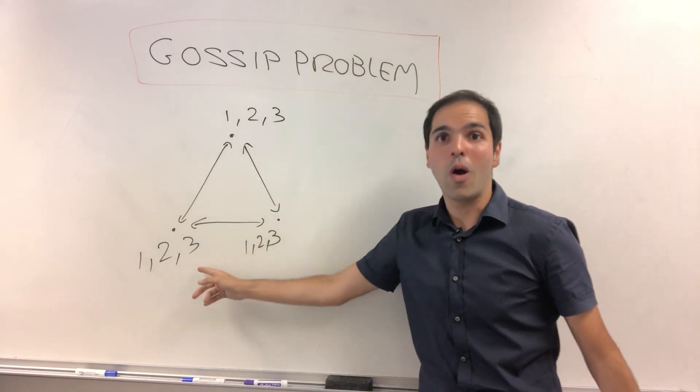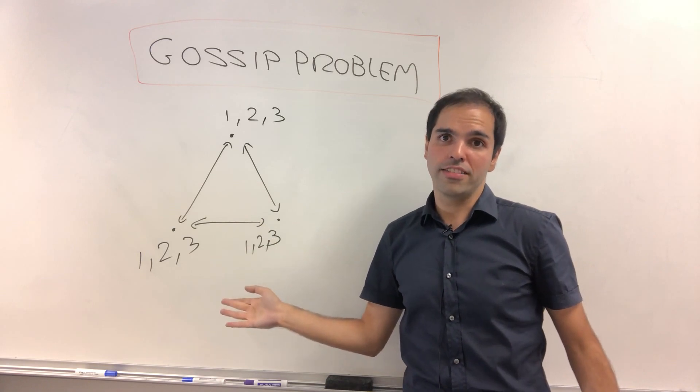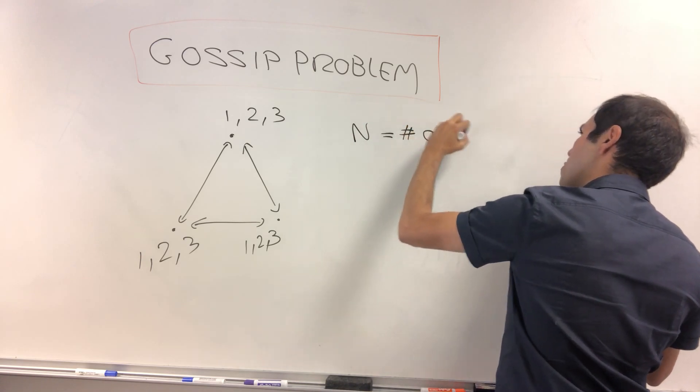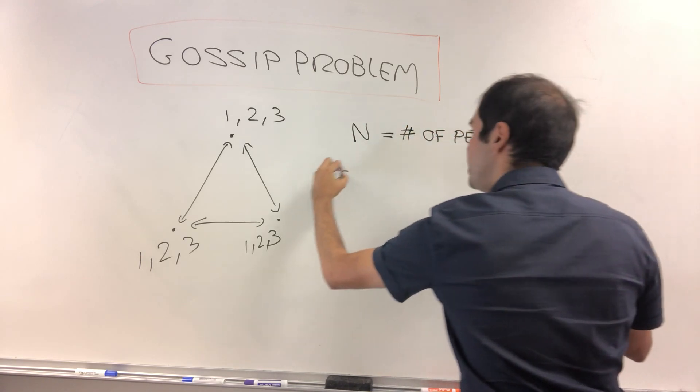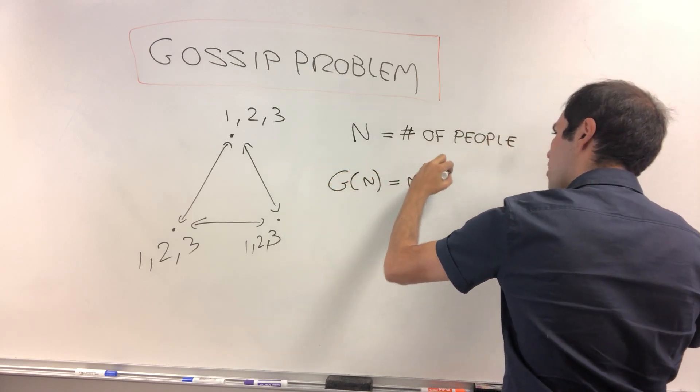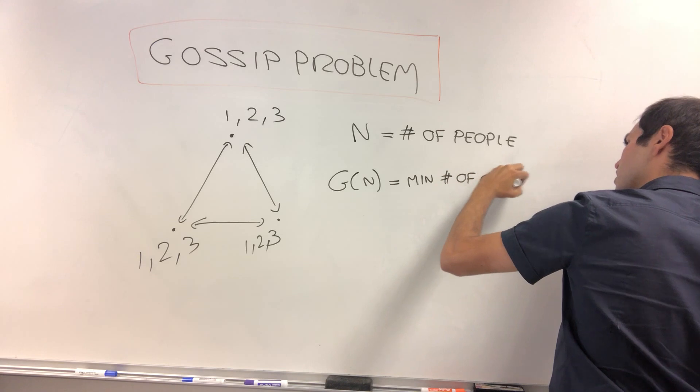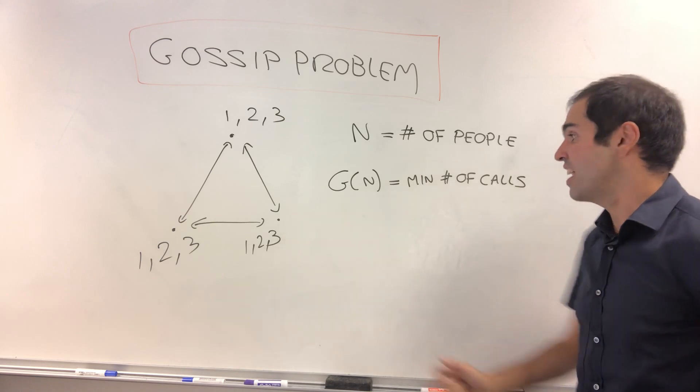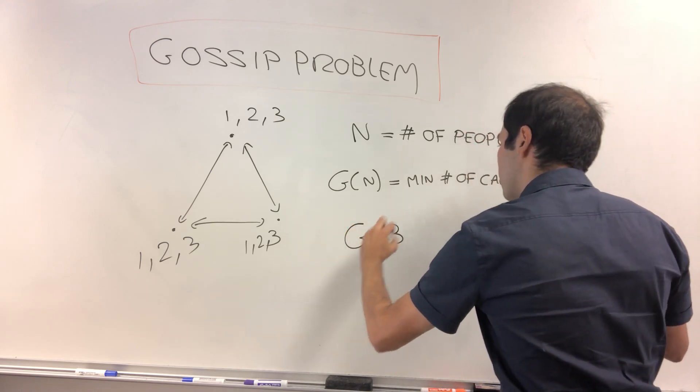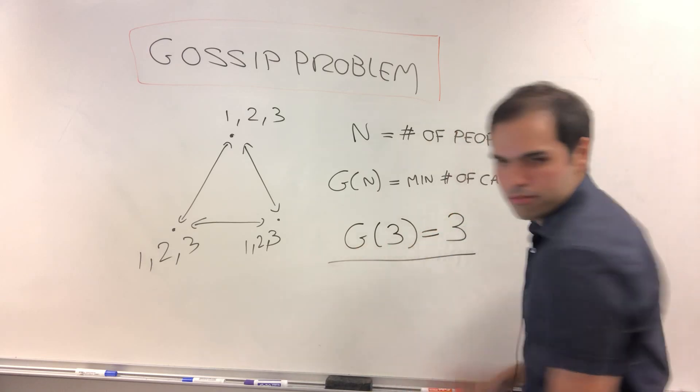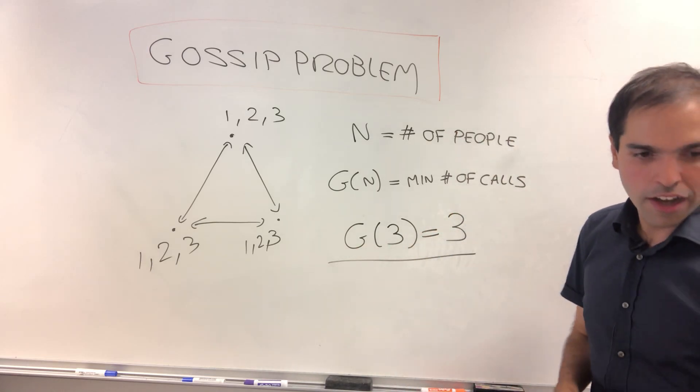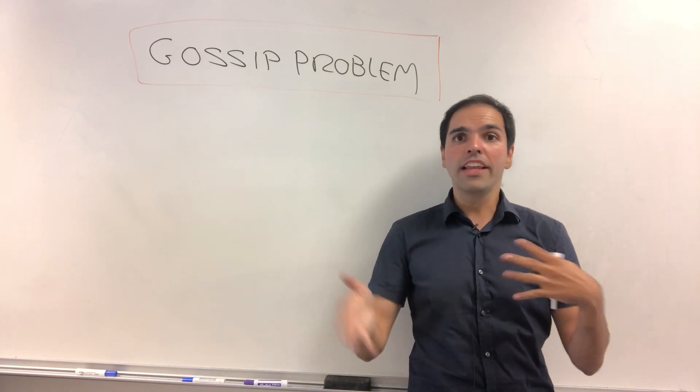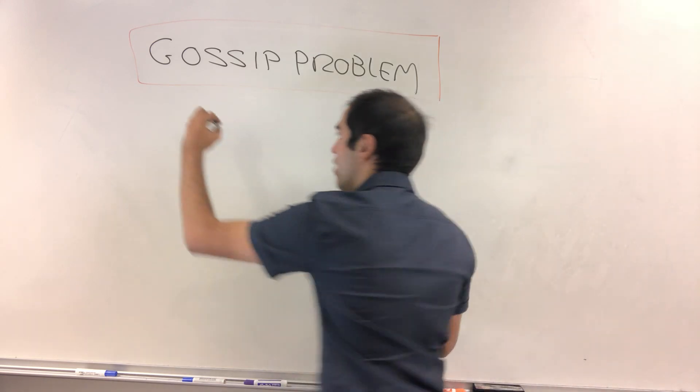So after the third call, everyone knows each other's gossips. So in particular, if n is the number of people and g of n is the minimum number of calls, then hopefully you can convince yourself that this was the most efficient strategy. We have just shown that g of three equals three. The minimum number of calls is three. And here's the question. What about for n people? What is the optimal number of calls?